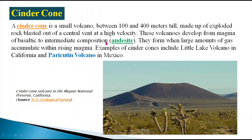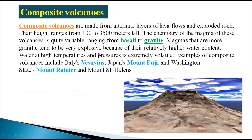Cinder cone volcanoes develop from magma ranging from basaltic to intermediate composition. They form when large amounts of gas accumulate within the rising magma. Examples of cinder cone volcanoes include Little Lake volcano in California and Paricutin volcano in Mexico. They are relatively small in both height and overall size.